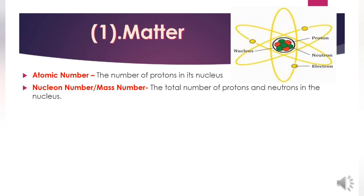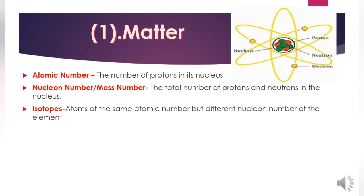Atoms of the same atomic number but different nucleon numbers are called isotopes. We can present the nuclear model according to this figure. The model describes the atom as a tiny, dense, positively charged core called the nucleus, in which nearly all the mass is concentrated, around which the light, negatively charged constituents called electrons circulate at some distance, much like planets revolving around the sun.